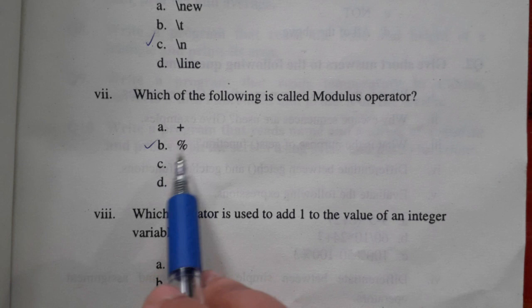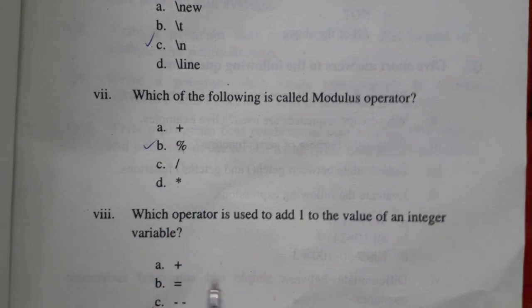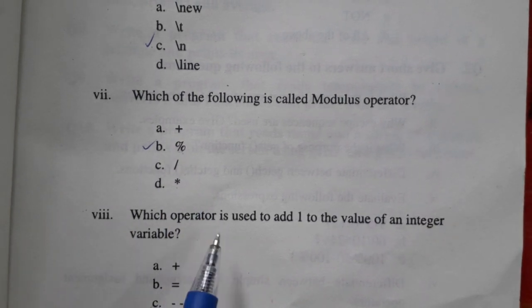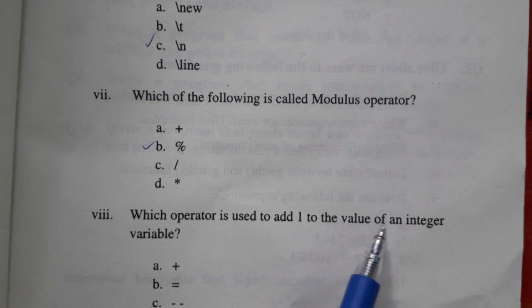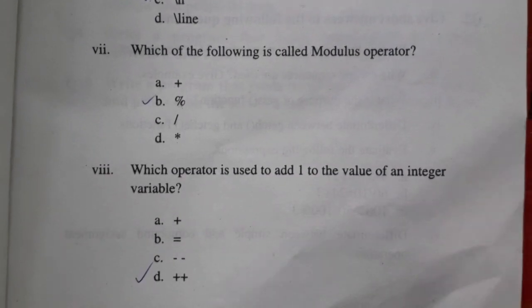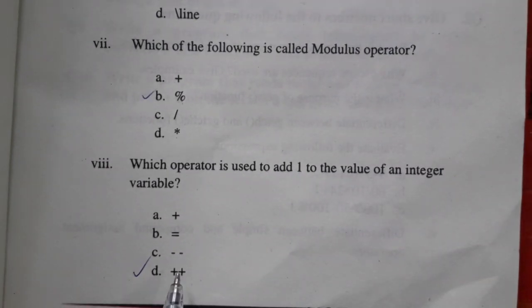Which operator is used to add 1 to the value of an integer variable? Plus equal, minus, minus, double, plus. The correct answer is double plus. This is the increment operator, which adds 1 to the value of integer variable.